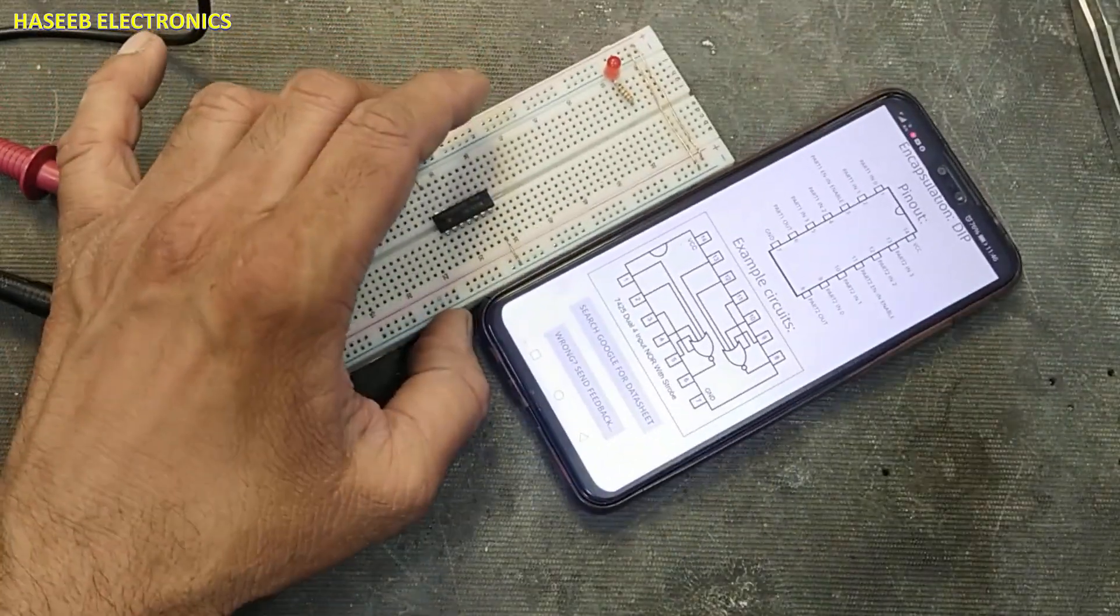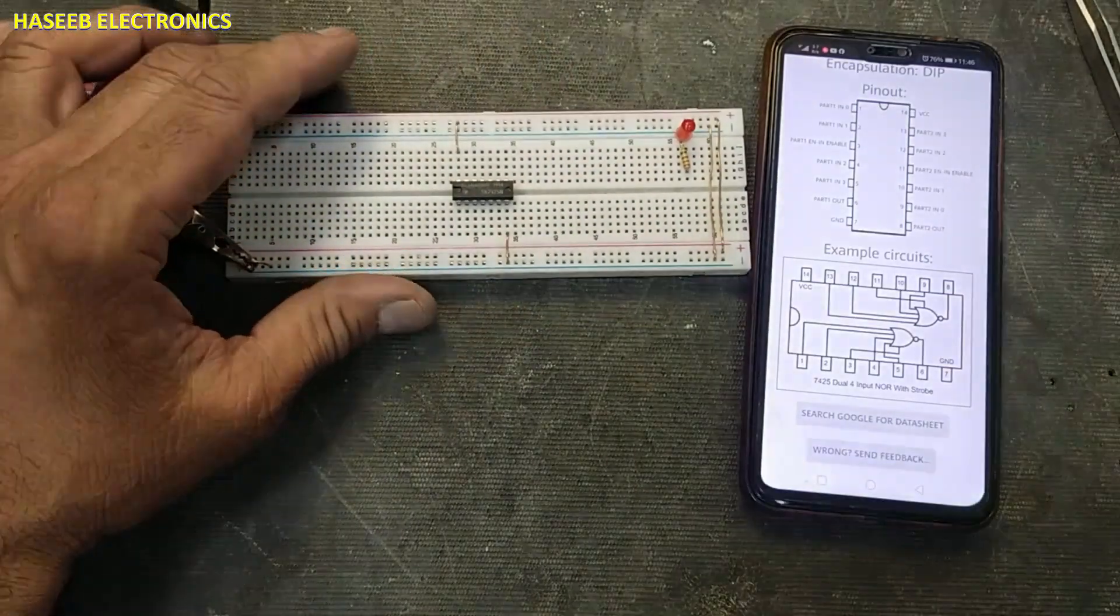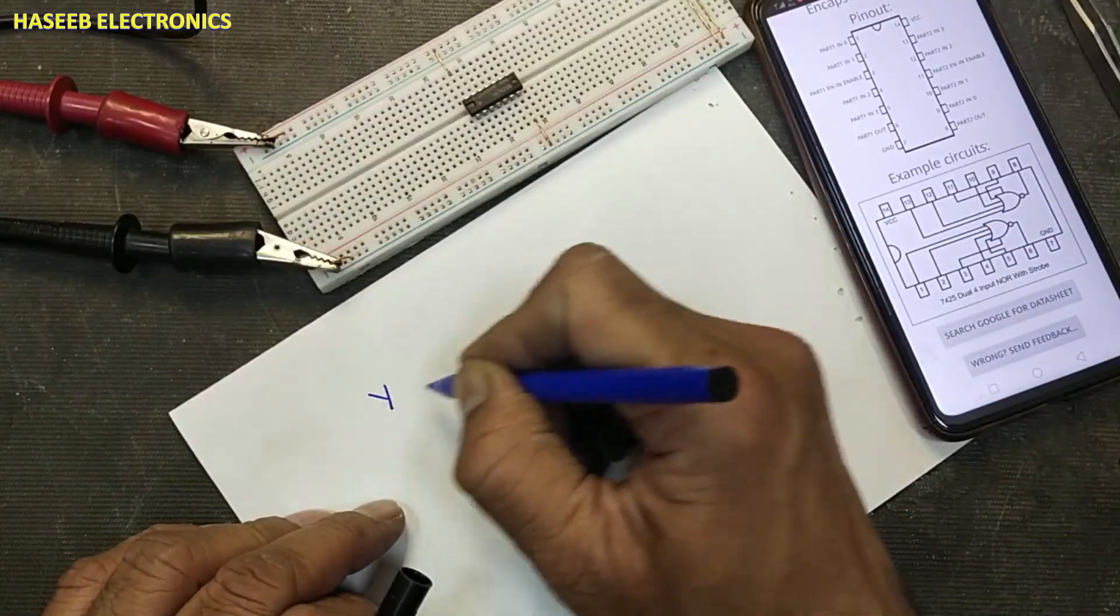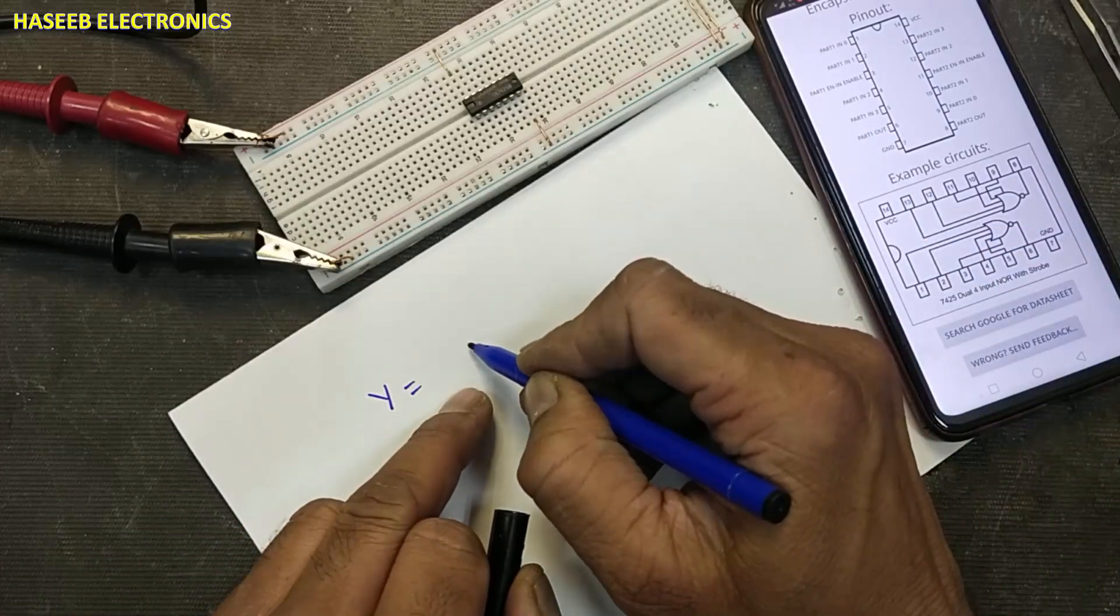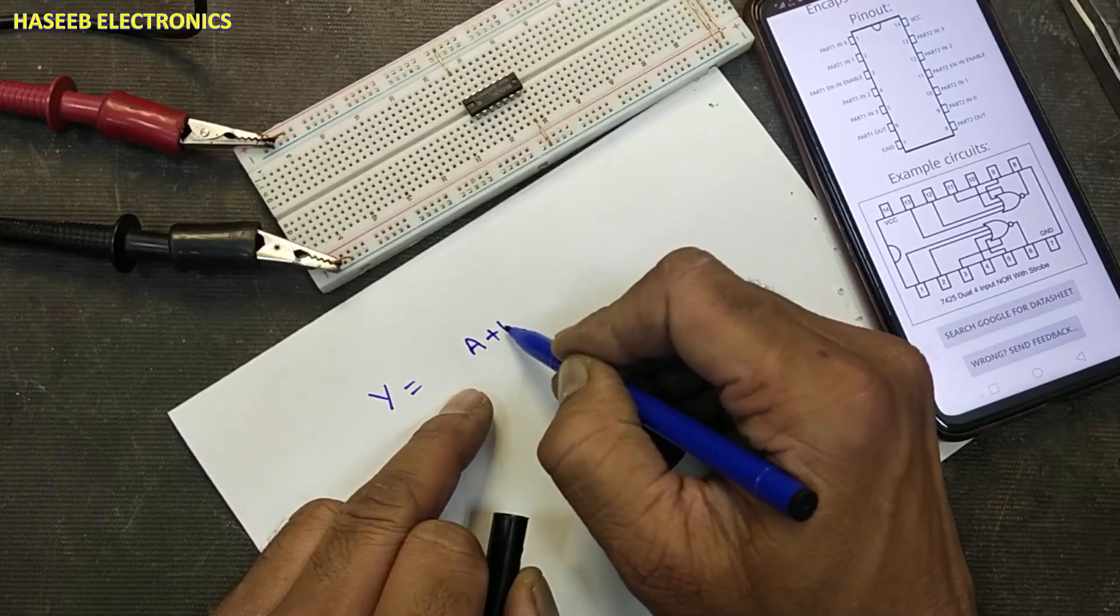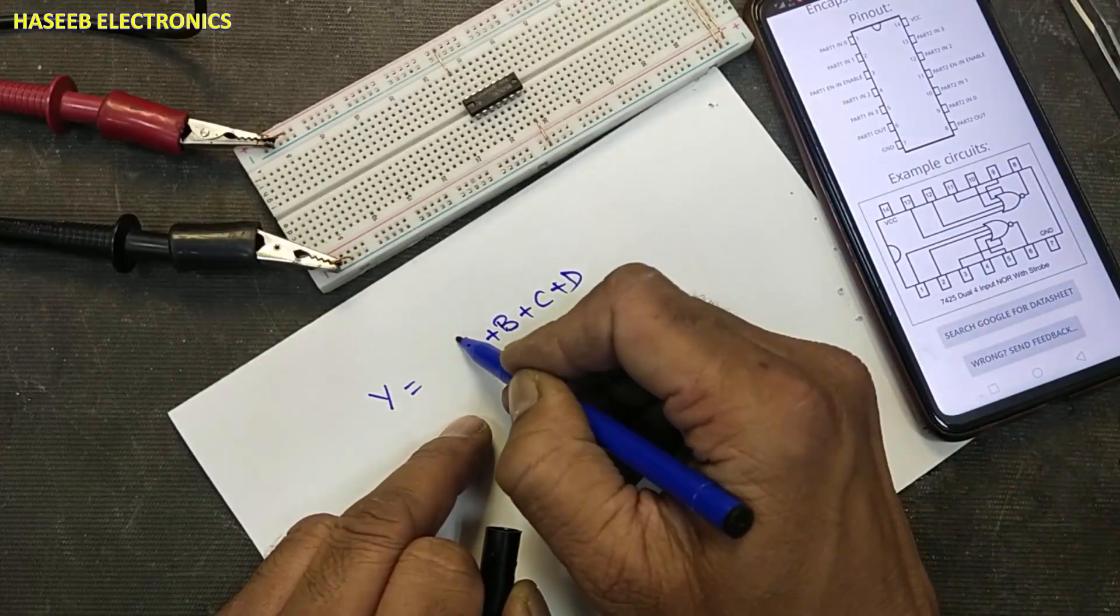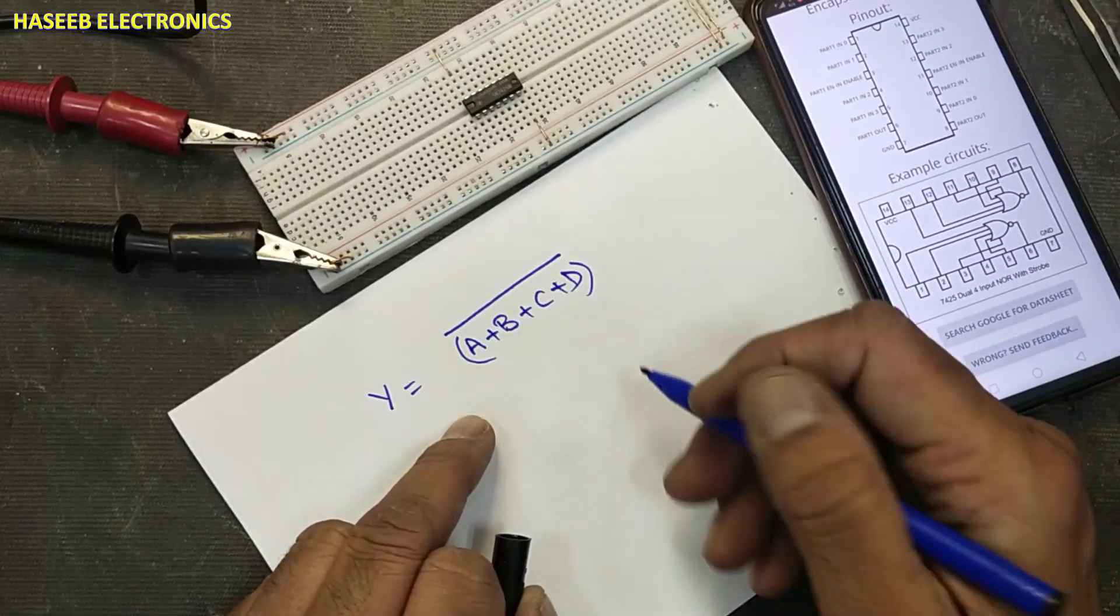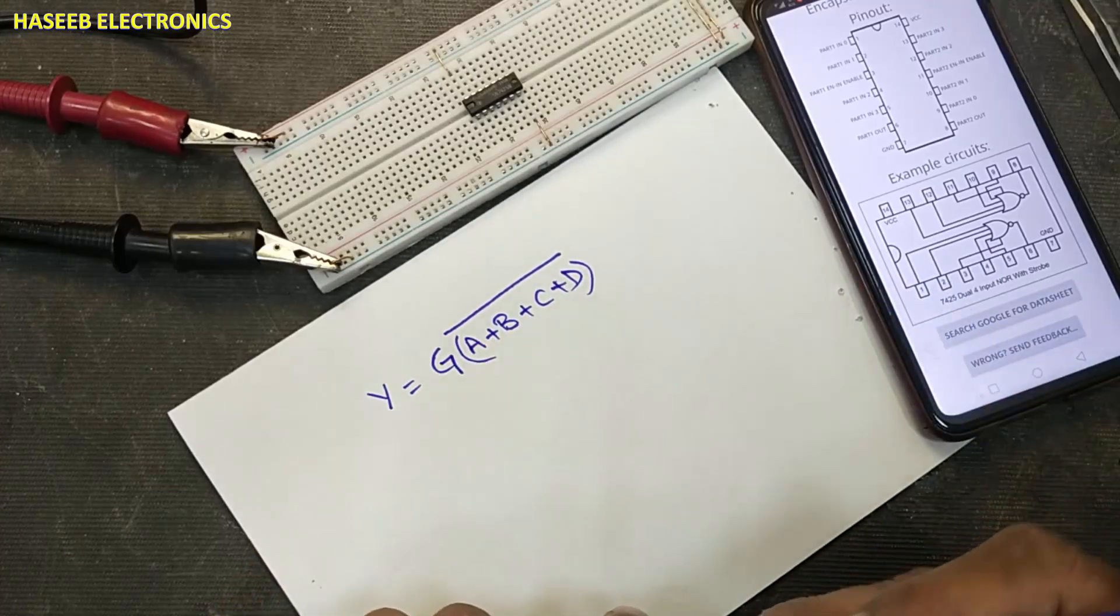So it is 4 input NOR gate with strobe. NOR gate, its output for example is Y. In any NOR gate, A plus B plus C plus D, 4 inputs, inverted.